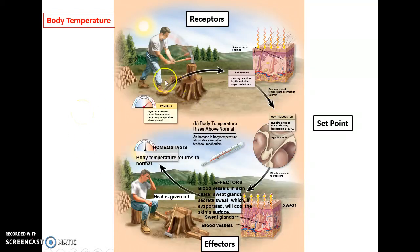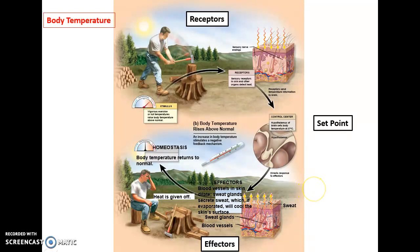On the opposite end, if you get way too hot — say, cutting wood outside — receptors detect the increase in body temperature and send that information to the brain to compare to the set point. Commands go to the effectors: blood vessels near the skin dilate to carry more heat to the body's surface, and sweat glands release sweat that evaporates to carry heat away even faster, with the goal of lowering body temperature and returning to the normal ideal range.